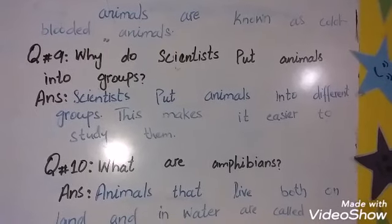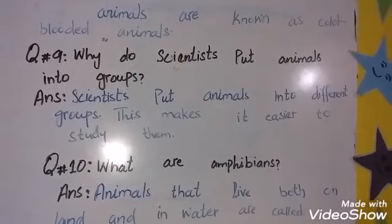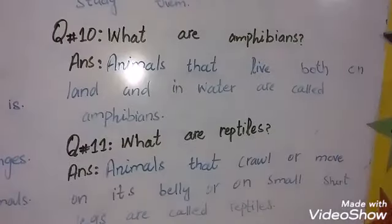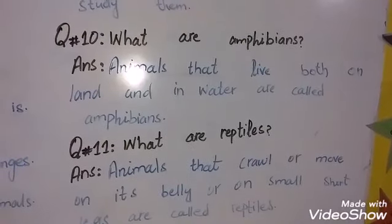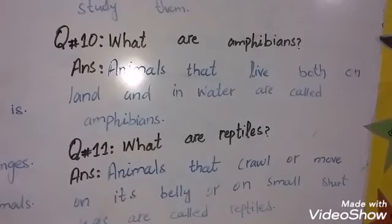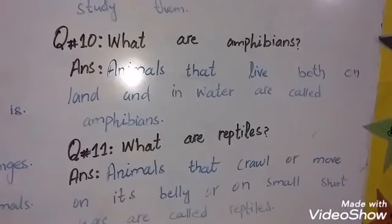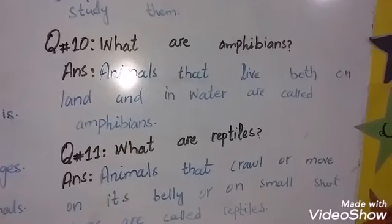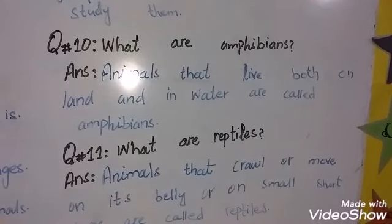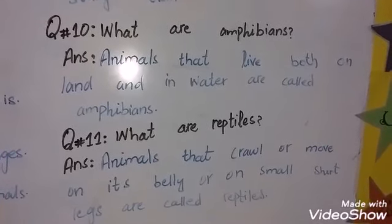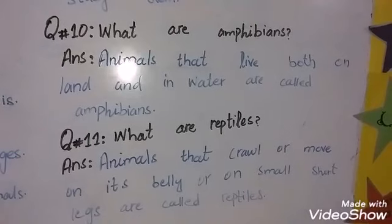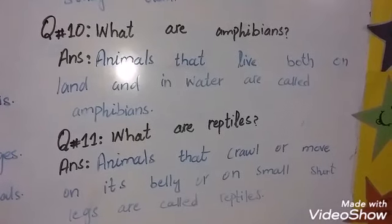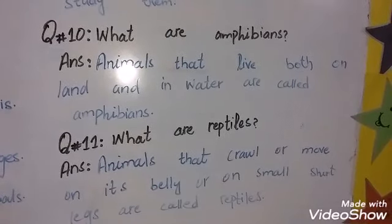Question number nine: why do scientists put animals into groups? Scientists put animals into different groups because this makes it easier to study them. Question number ten: what are amphibians? Animals that live both on land and in water are called amphibians.